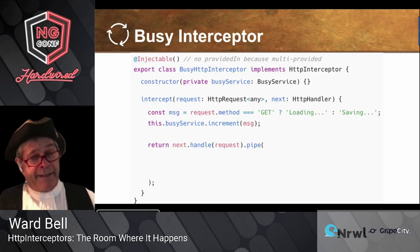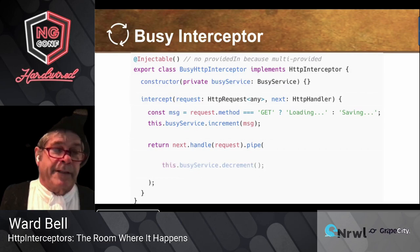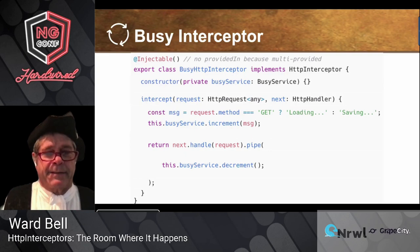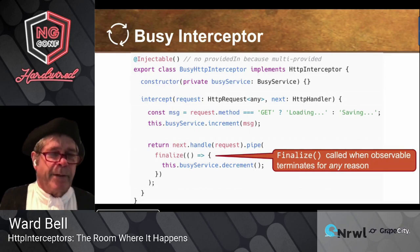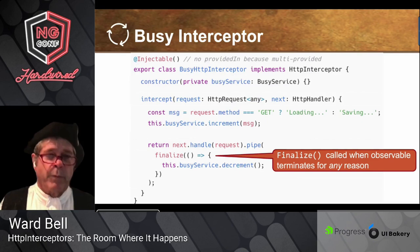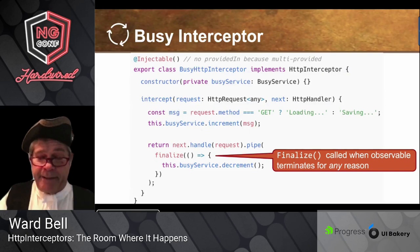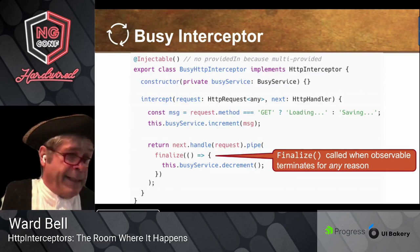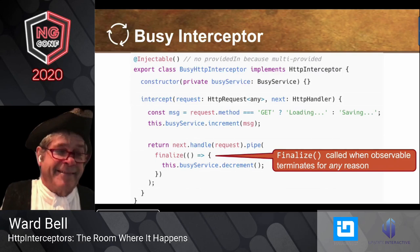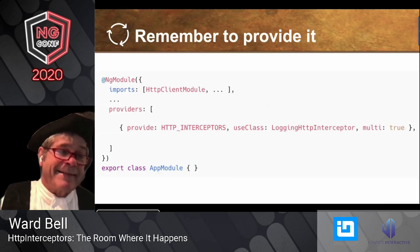We've got to take the spinner down when the last response comes through. We do that somewhere inside the pipe — remember, that's how you manipulate a response. The operator we want is finalize, not tap, because we want to decrement and shut the spinner down for whatever terminates the response: whether the response completed, there was an error, or someone unsubscribed. In all those cases, finalize is your operator.